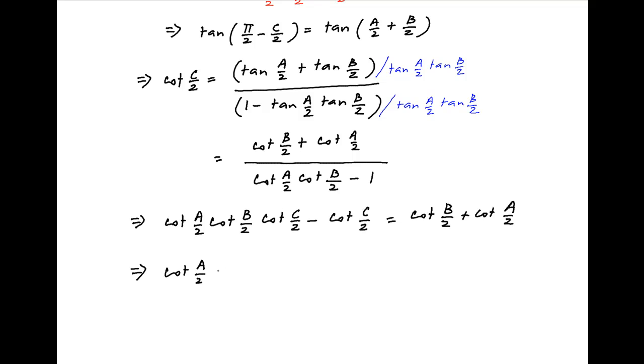This can be rearranged as cot of A upon 2 plus cot of B upon 2 plus cot of C upon 2 equals cot of A upon 2 times cot of B upon 2 times cot of C upon 2, which is the desired result.